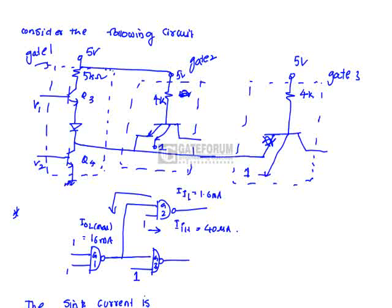It can sink a maximum of 16 milliamps. For Gate 2 and Gate 3, if the input is low, the current supplied to Gate 1 is 1.6 milliamps. When Gate 2 is at logic 1, it takes a current of 40 microamps. Similarly for Gate 3.